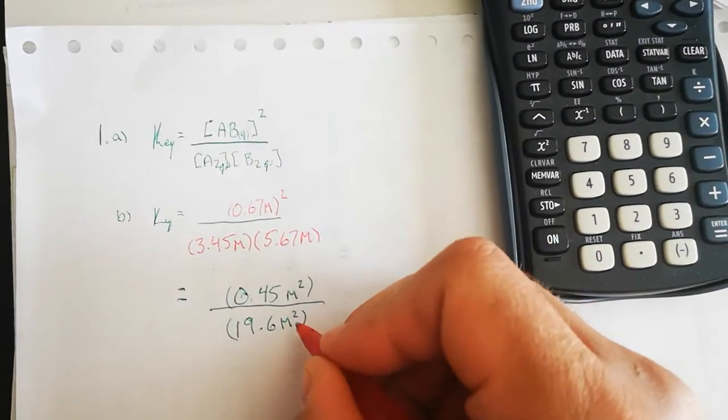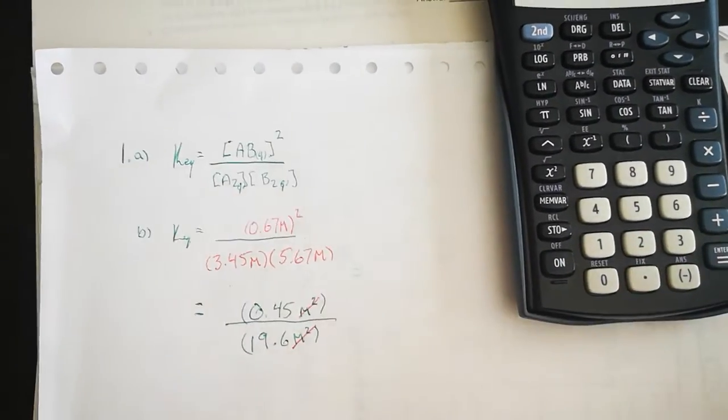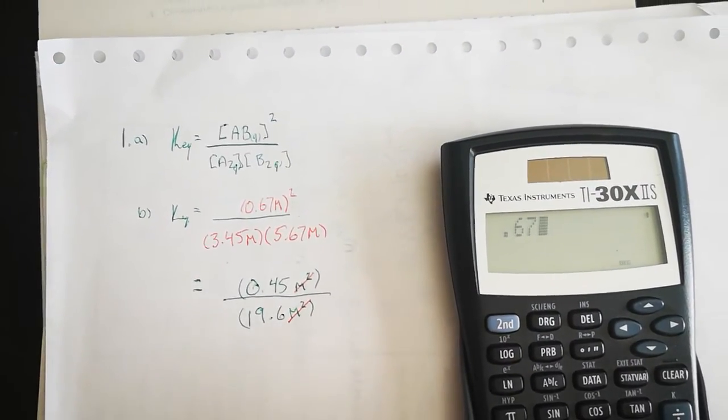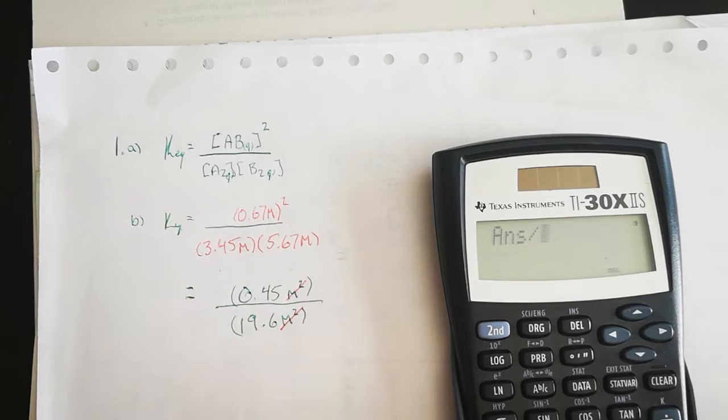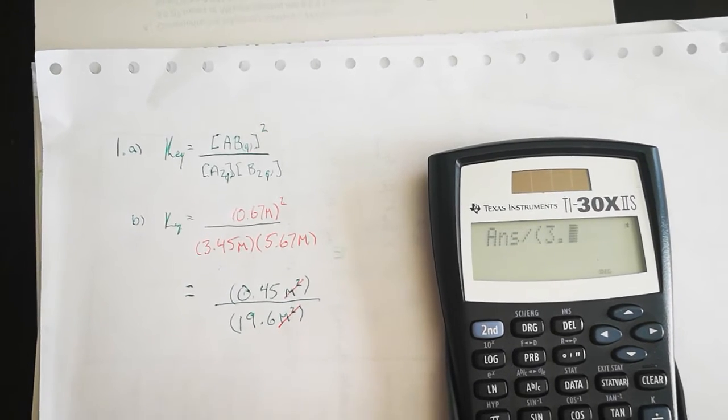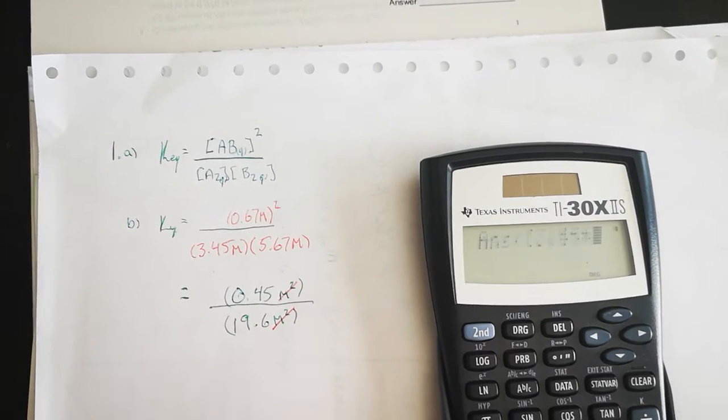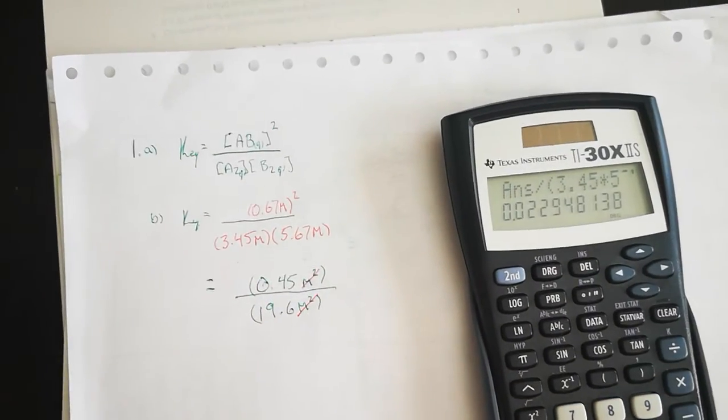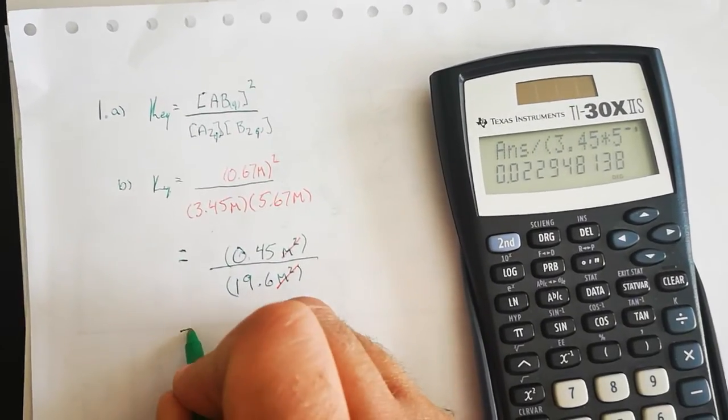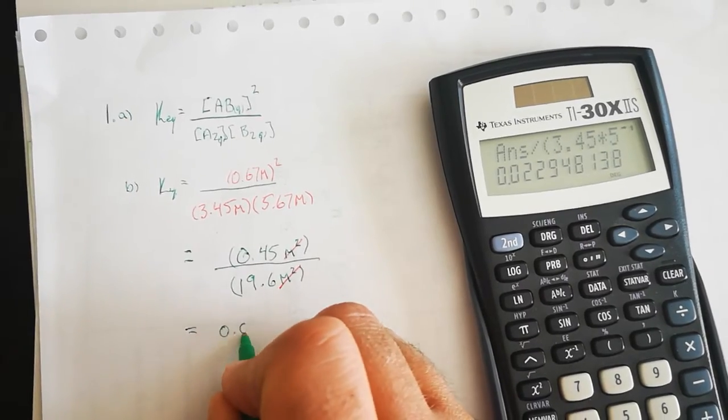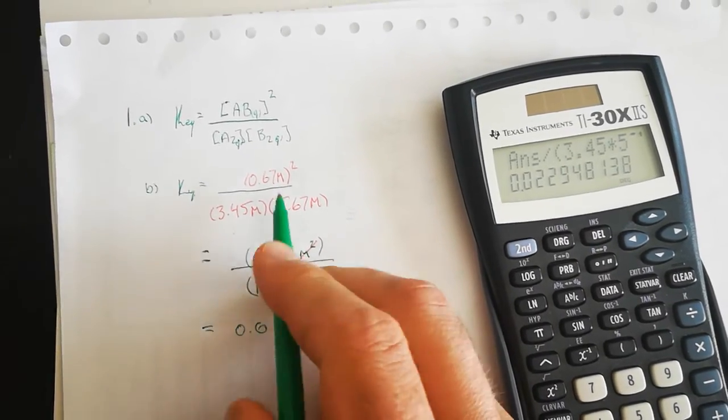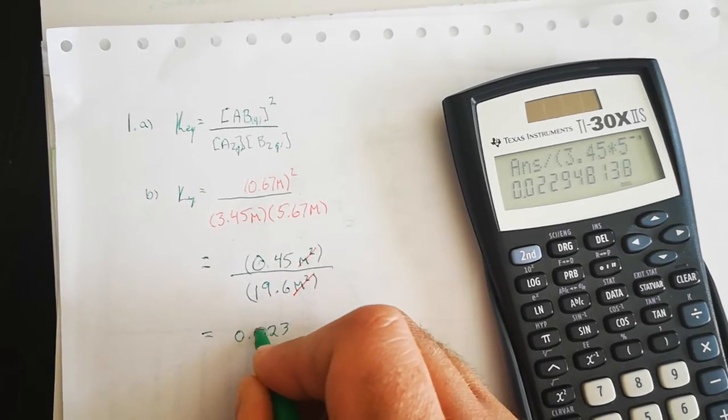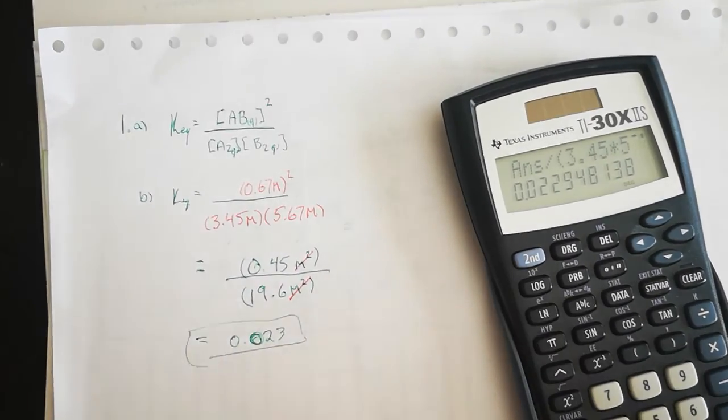Notice how our units will completely reduce - there will be no unit in our final answer. Our final answer here is that Keq for this reaction is equal to 0.023. Because we got only two sig figs here and two sig figs there, there is no unit.